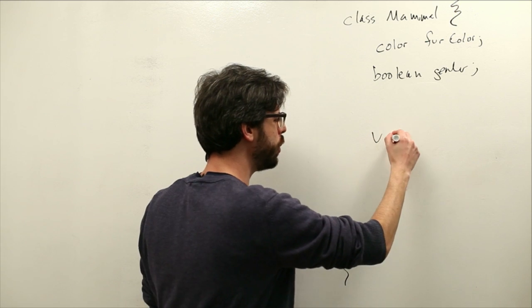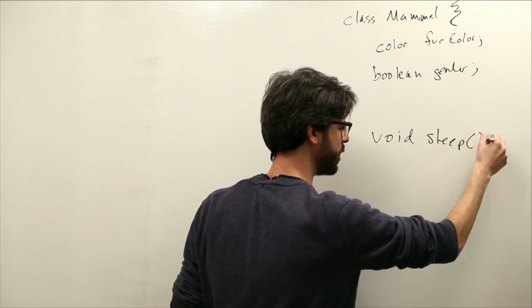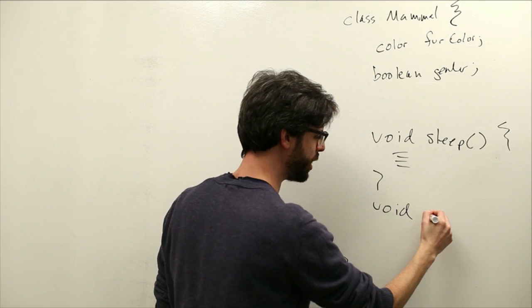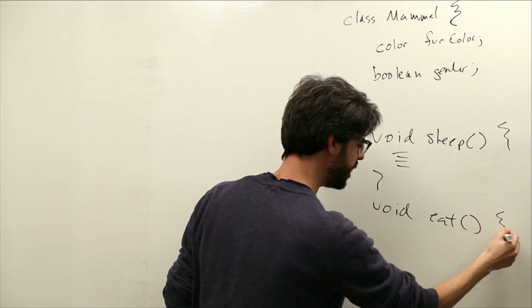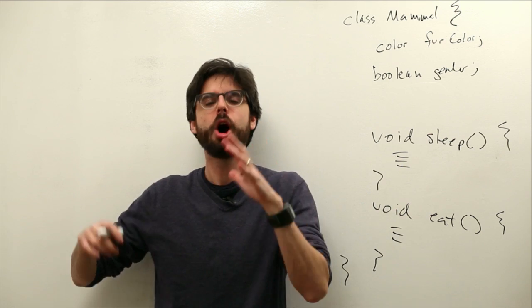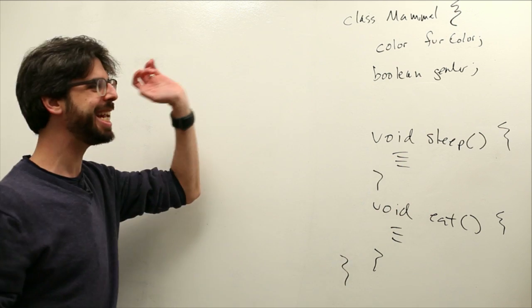And we're going to write some functions. What do mammals do? We need to have a function that we can call when it's time for the mammal to go to sleep. And we need to have a function when it's time for the mammal to eat, and we'll put some code in there. So we're writing this class, and we do this all the time with our mover, our particle.